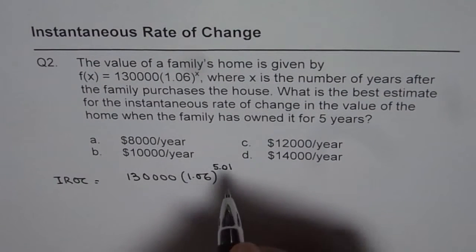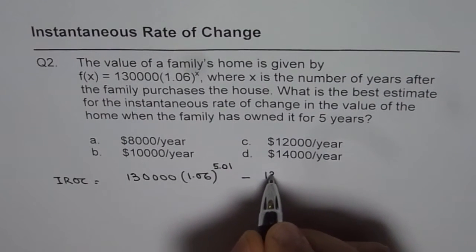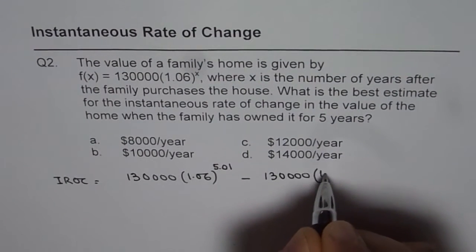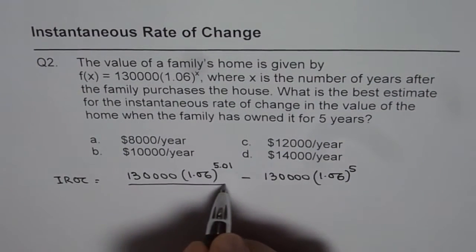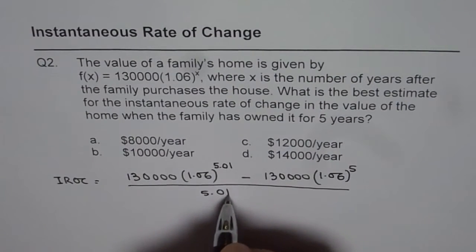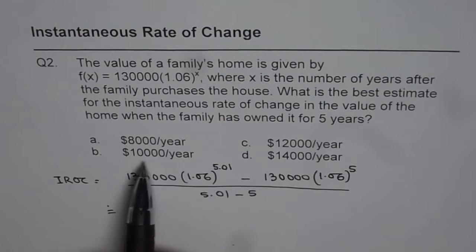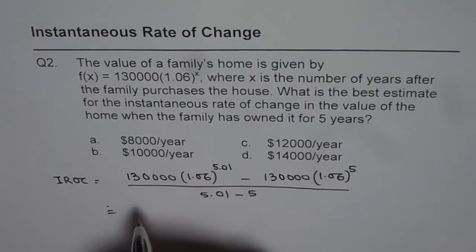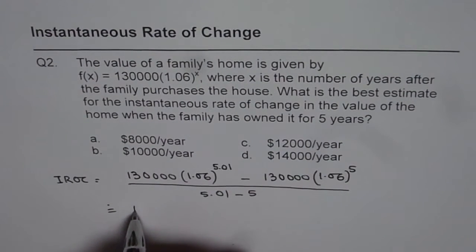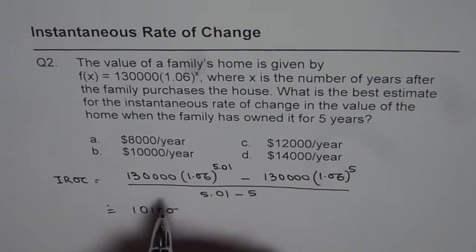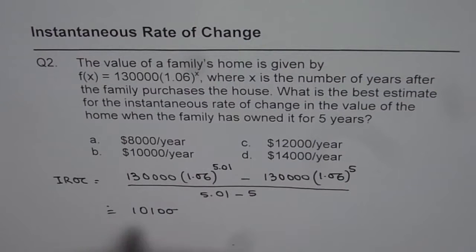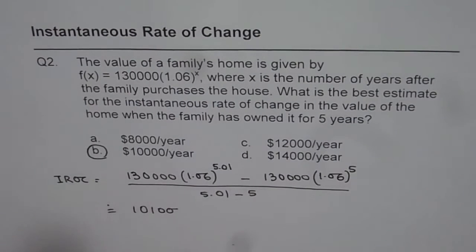We compute [130,000 × 1.06^5.01 − 130,000 × 1.06^5] divided by (5.01 − 5). If you do this calculation, you get a value closer to $10,000 — more precisely approximately $10,100. So choice B is the right answer.